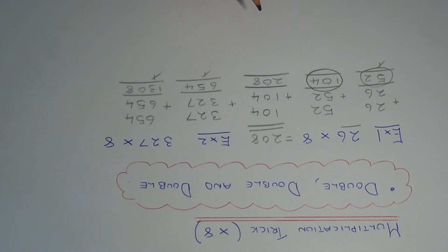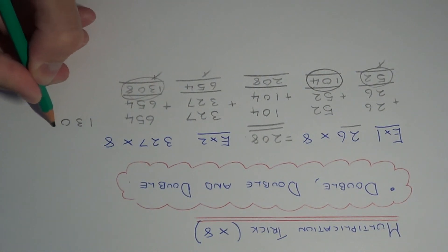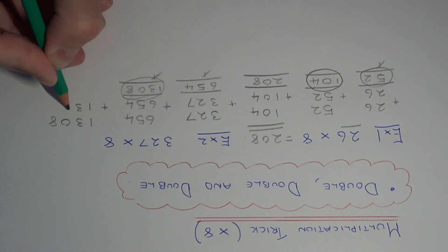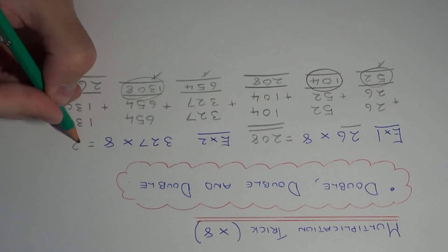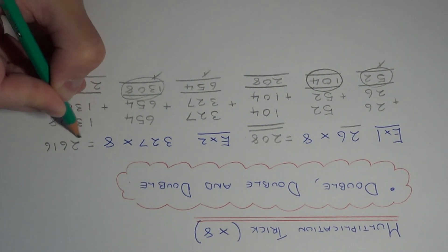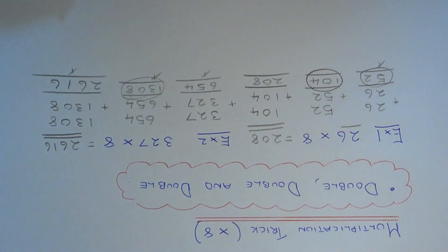And finally we just need to double this answer one last time. 8 add 8 is 16, 0 add 0 is 0 plus the 1 is 1, 3 add 3 is 6, 1 add 1 is 2. So our final answer is 2616. Thanks for watching.